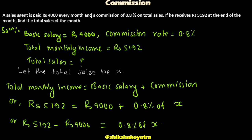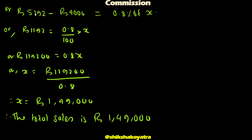Let the total sales be X. Total monthly income equals basic plus commission. So 5,192 equals 4,000 plus commission. The commission rate is 0.8% of total sales X. So 5,192 equals 4,000 plus 0.8% of X.